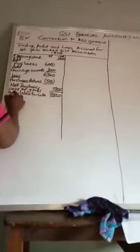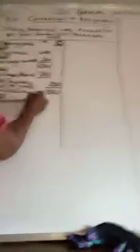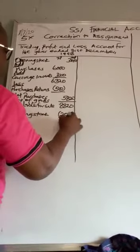Less closing stock. Closing stock is 2,500 to give you 6,320.